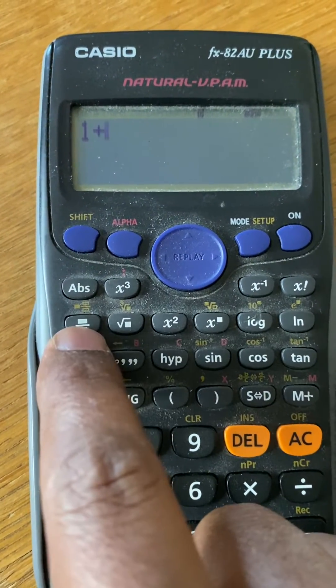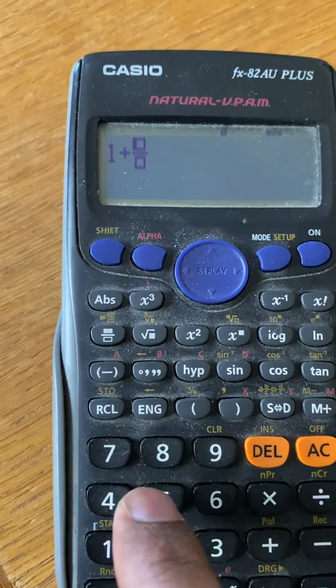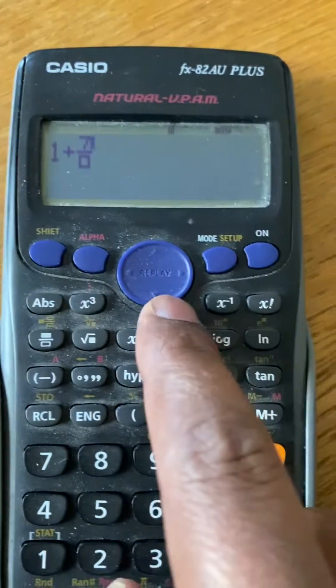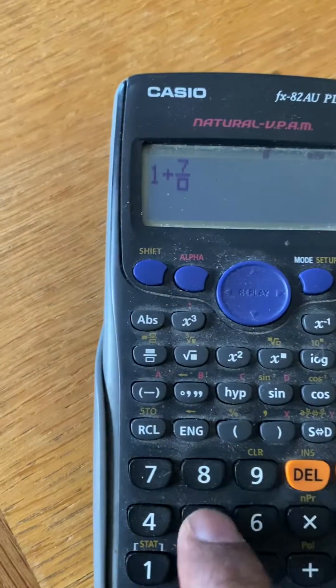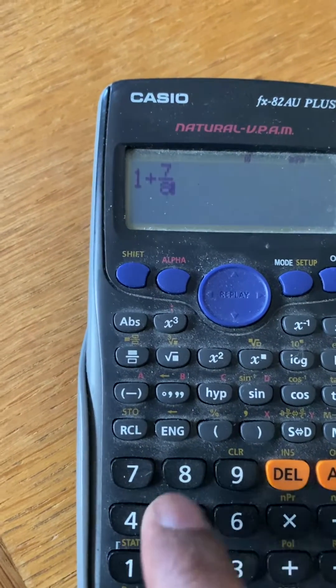is press this button here. You see this button and on the top comes a numerator. I press 7 here and then press the down arrow key and put 8 here, 7/8.